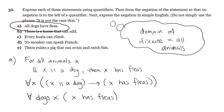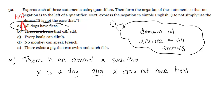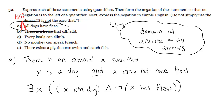Now, how do you negate 'All dogs have fleas'? 'Not all dogs have fleas' means there's at least one dog who doesn't — an existential statement. So: ∃x (D(x) ∧ ¬F(x)) — there exists an animal x such that x is a dog and x does not have fleas. You can abbreviate this as: there exists a dog x such that x does not have fleas. In simple English: some dogs don't have fleas.